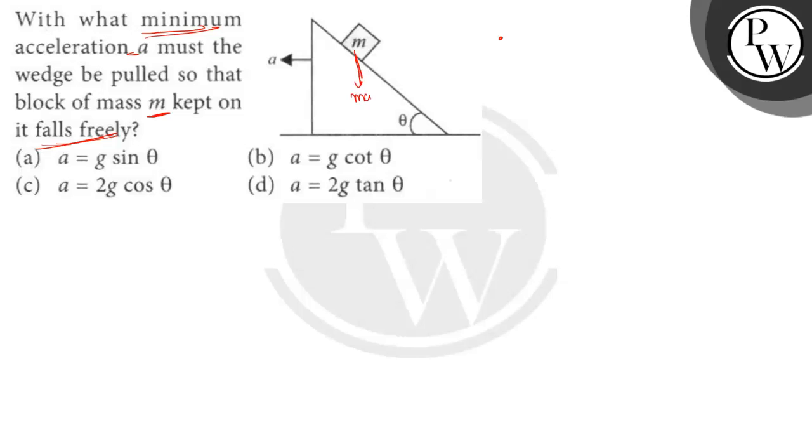This angle is theta, then here is 90 minus theta. This gives mg cos(90 - theta), which is mg sin theta. Here is mg cos theta.